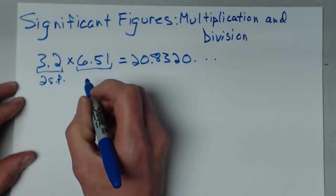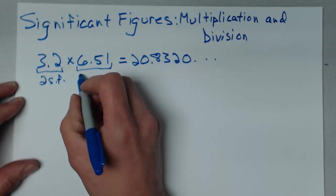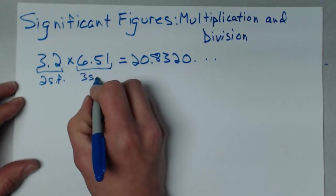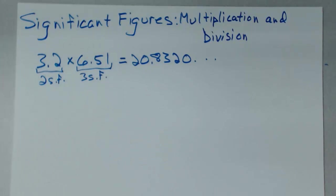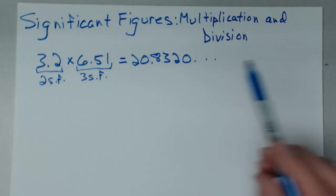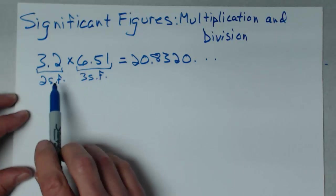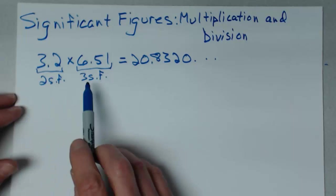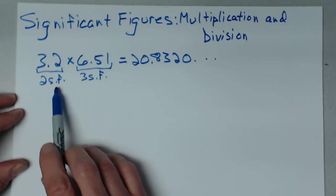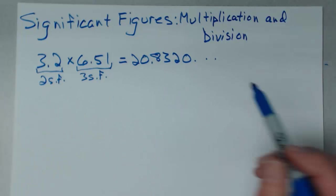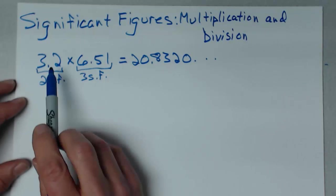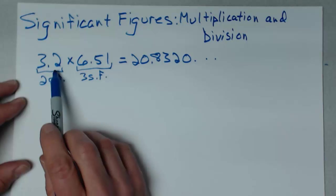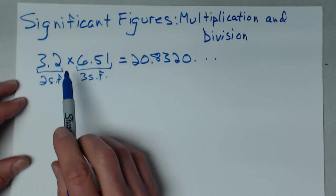When multiplying or dividing, the number of significant figures you keep in the result depends on how many you start with. The number you can keep in the result is the lesser of the two numbers you have. I have only two significant figures in 3.2, so that's all I can keep in the result.